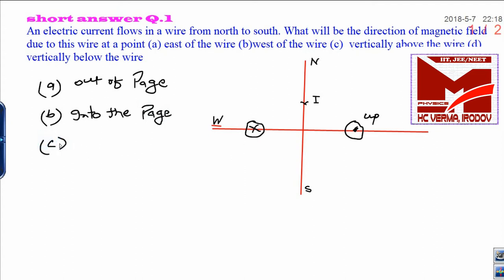Similarly part C. Part C means vertically above the wire. When you see vertically above the wire, that will be right to left.